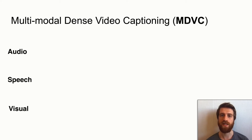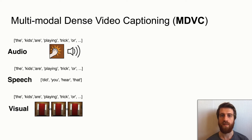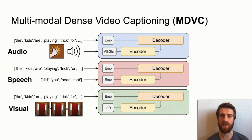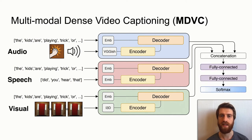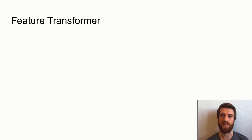We propose a multimodal dense video captioning module. The model inputs features from audio, visual, and speech modalities, as well as the previous sequence of caption words. It processes inputs in corresponding encoder-decoder blocks; all three outputs are fused in a multimodal generator that models the distribution for the next caption word. The model is not limited to three modalities. As the encoder-decoder architecture we select the transformer — not recurrent, efficiently scalable, and capable of catching long-term dependencies, initially proposed for machine translation.